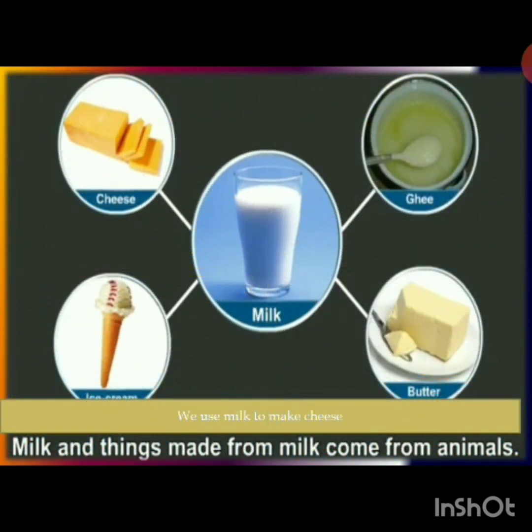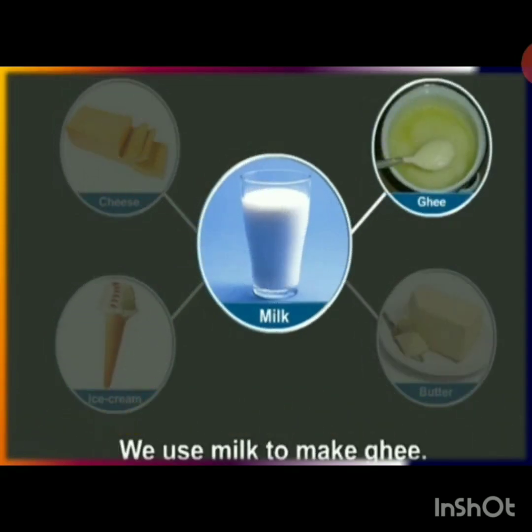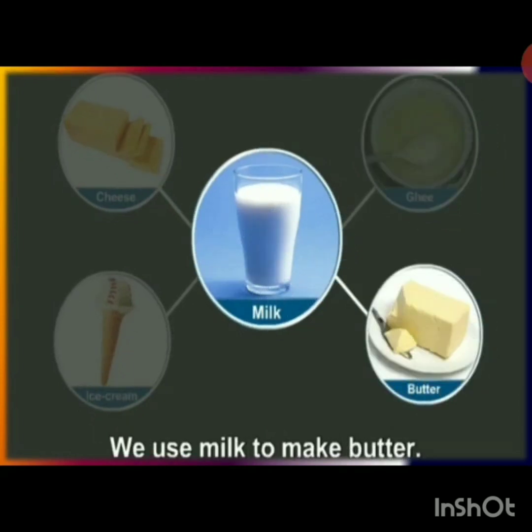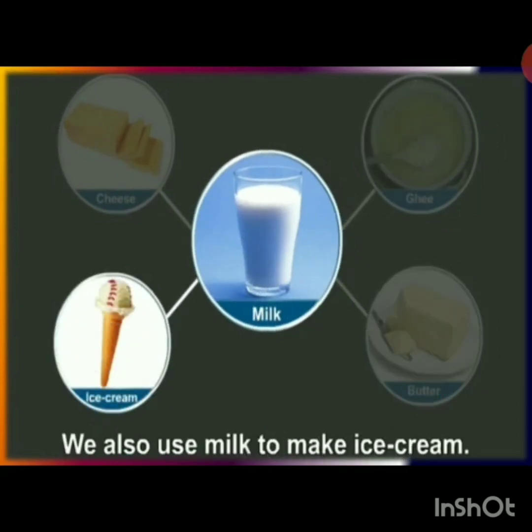Milk and things made from milk come from animals. We use milk to make ghee, we use milk to make butter, and we also use milk to make ice cream.